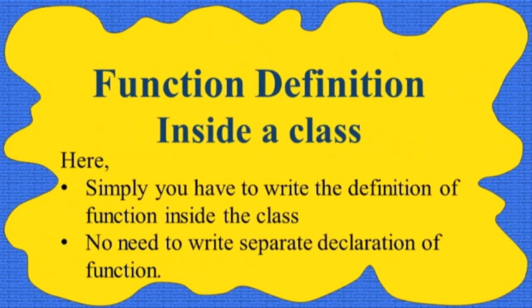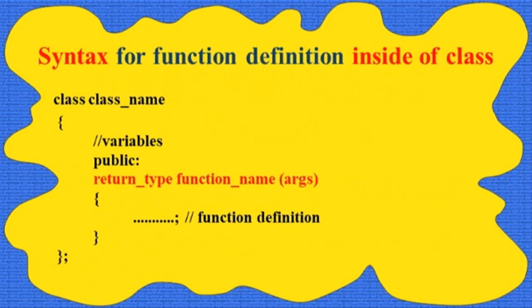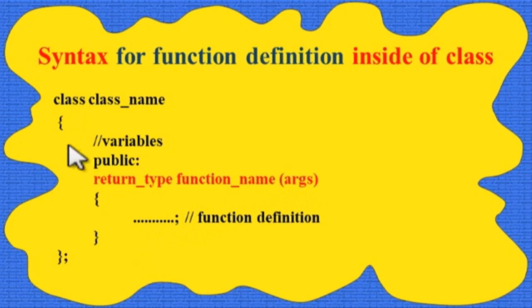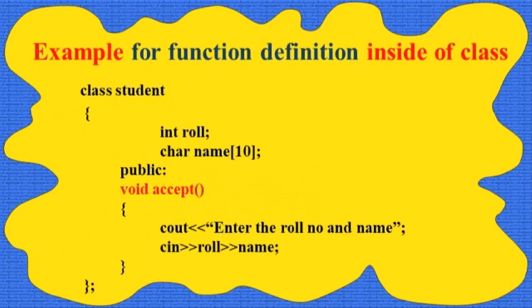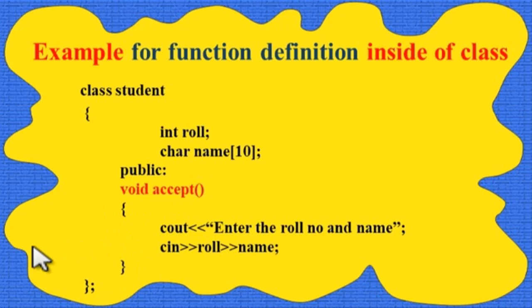First, function definition inside a class. Here you simply have to write the definition of the function inside the class — no need to write a separate declaration. The syntax uses return type, function name, and arguments, followed by the body part of the function included inside the class. For example, in a student class, the accept function is written inside the class as void accept with its body part.